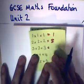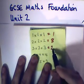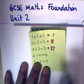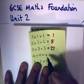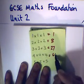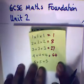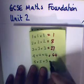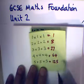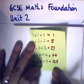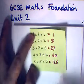3 times 3, which is 9, times 3 is 27. 4 times 4 is 16, times another 4 is 64. And 5 times 5, 25, times another 5 is 125. Those are probably all the cube numbers you will need to know for foundation. Okay?